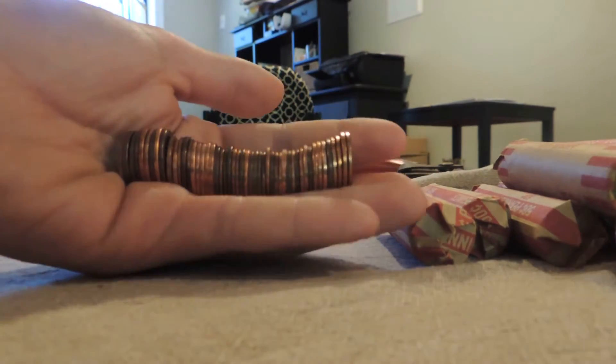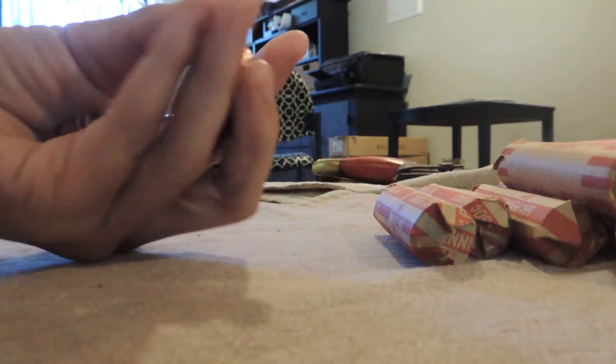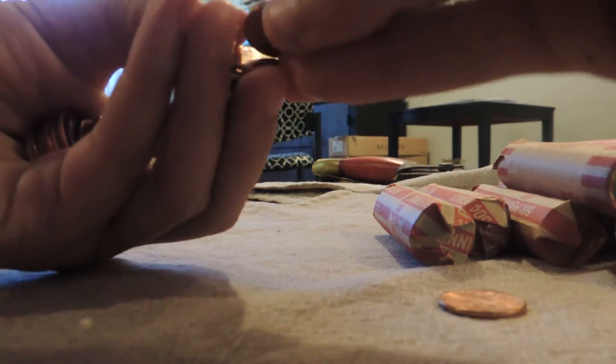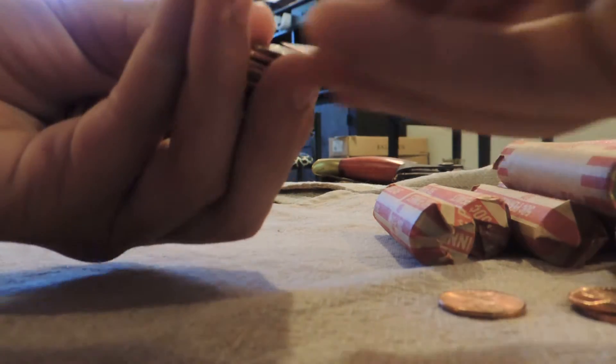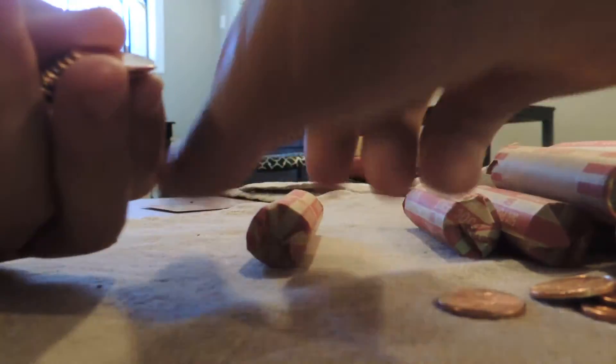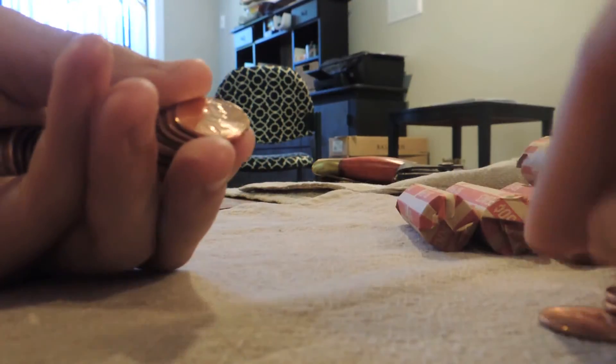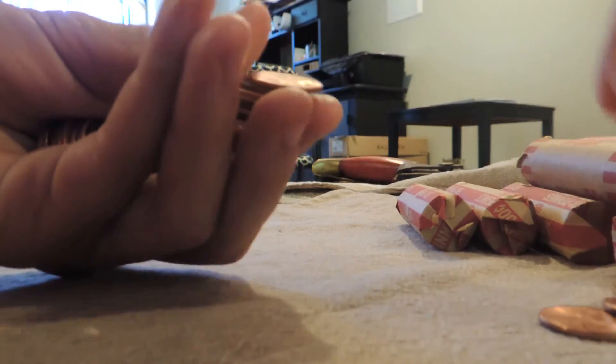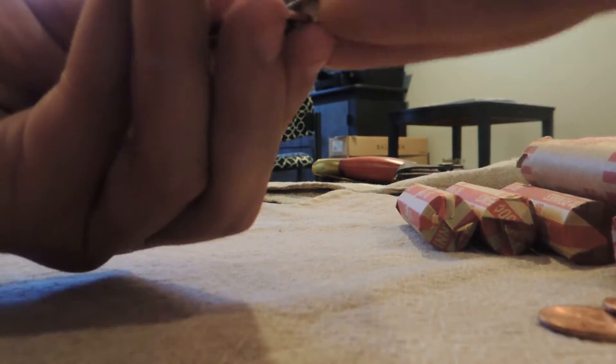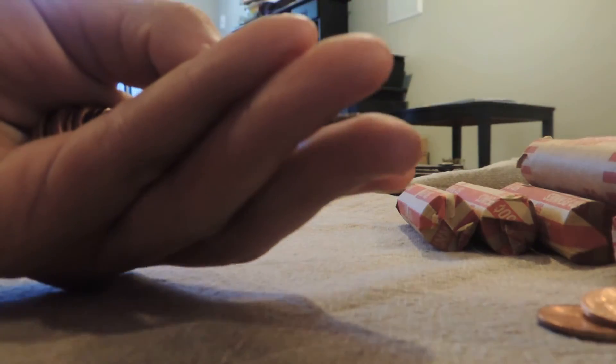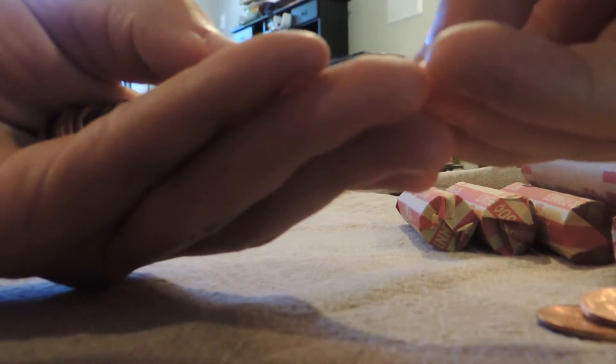Alright, here's the first roll right here. So when I put them to the left that means they're new pennies, and when I put them to the right they're new. I guess my lefts and rights are messed up. And then when I put them to the left they're the copper pennies that I'm looking for.